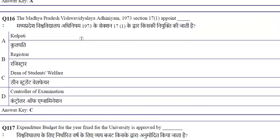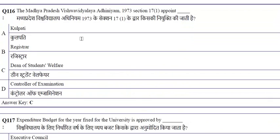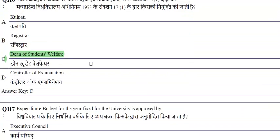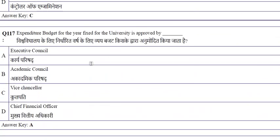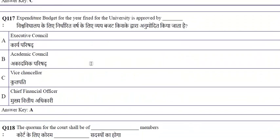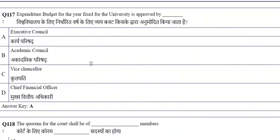Under Section 17(1) of the MP Vishwavidyalaya Adhiniyam 1973, the Dean of Students Welfare is appointed. The expenditure budget for the year fixed for the university is approved by the Executive Council.